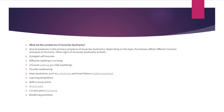Muscle weakness is the primary symptom of muscular dystrophy. Depending on the type, the disease affects different muscles and parts of the body. Other signs include enlarged calf muscles, difficulty walking or running with an unusual gait, trouble swallowing, heart problems such as arrhythmia and cardiomyopathy, learning disabilities, stiff joints, muscle pain, curved spine, and breathing problems.